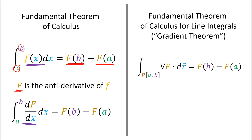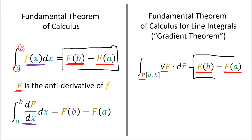The second theorem is the fundamental theorem of calculus for line integrals, also called the gradient theorem. This tells us that to compute the line integral involving the gradient of some function capital F along some path p, we only need to know the value of F at the endpoints a and b. So for both theorems we have an integral that we can compute only by knowing the values of a function at some endpoints — and this idea is going to be very important to us in this video.